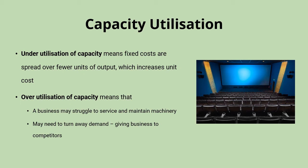If you're turning customers away, you're turning them towards competitors. For that reason, most businesses look to around 90% to 95% capacity utilisation as a good level to aim for. Too high, and you've got problems with servicing and maintaining machinery and turning away demand. Too low, and that's going to drive up their cost per unit of production.